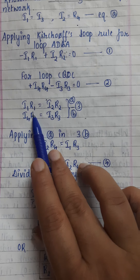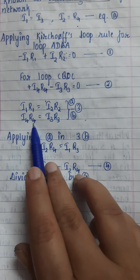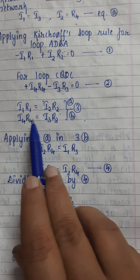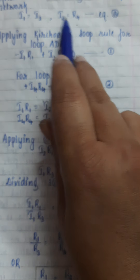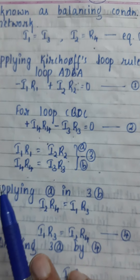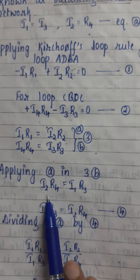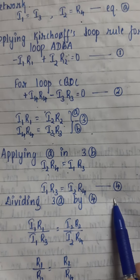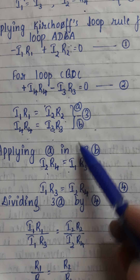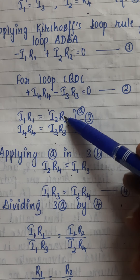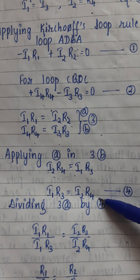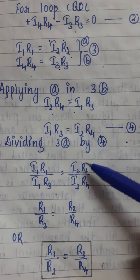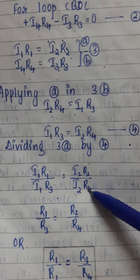From the first equation: i1·R1 = i2·R2. From the second equation: i4·R4 = i3·R3. Substituting i4 = i2 and i3 = i1, we get: i2·R4 = i1·R3. Now dividing the third and fourth equations: (i1·R1)/(i1·R3) = (i2·R2)/(i2·R4).